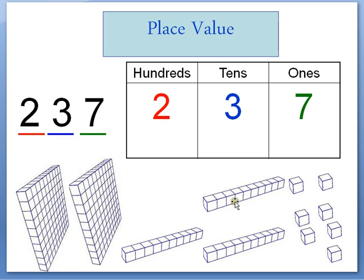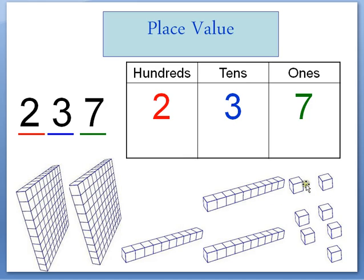Ten, twenty, thirty — two hundred thirty. One, two, three, four, five, six, seven — two hundred thirty-seven.